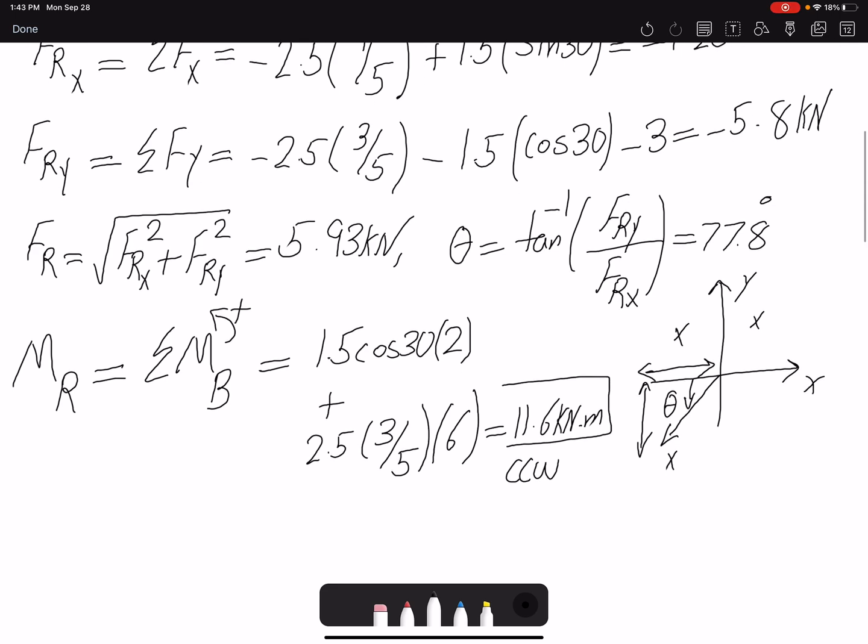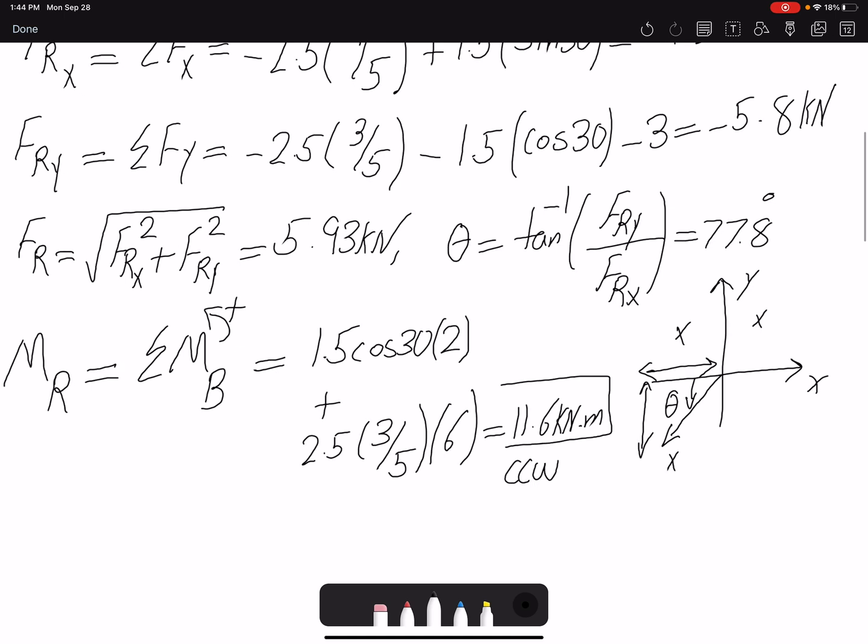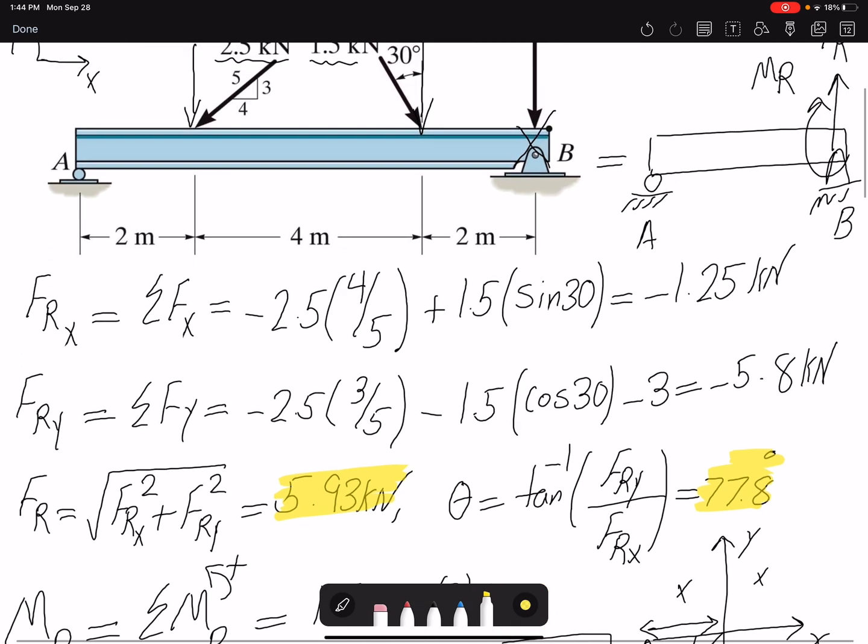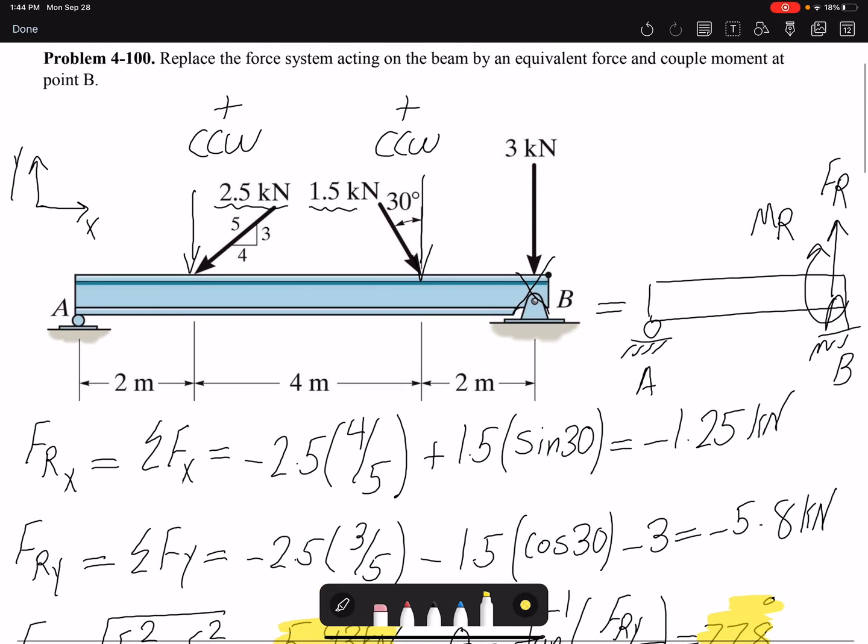So now we can replace our force and moment with a moment of this value, 11.6. And a force of this value, with this angle. And our two systems would be equal. Because they have the same moment and the same force. So now we have the same force.